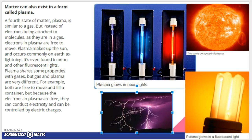So, matter can also exist in a form called plasma. A fourth state of matter, plasma, is similar to a gas, but instead of electrons being attached to molecules as they are in a gas, electrons in plasma are free to move. So, we haven't talked about electrons, but as you guessed, electron is like what other word? Electricity. So, electrons moving, which are parts of the atoms, when the electrons move, they can make electricity. So, when you think about the bolts of lightning, right? Electricity. Plasma makes up the sun and occurs commonly on Earth as lightning. It's even found in neon and other fluorescent lights. Plasma shares some properties with gases, but plasma and gas are very different. For example, both are free to move and fill a container, but because the electrons in a plasma are free, they can conduct electricity and be controlled by electric charges.